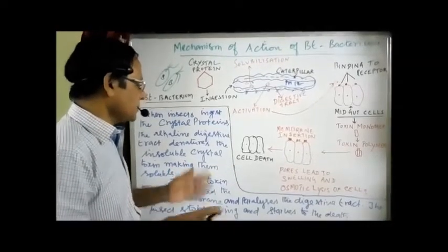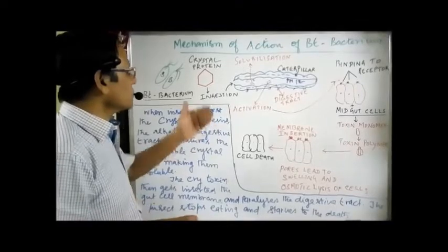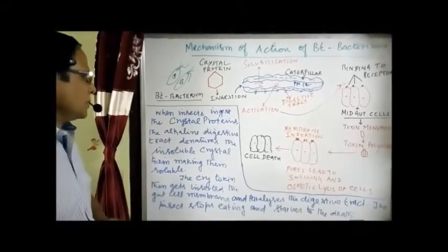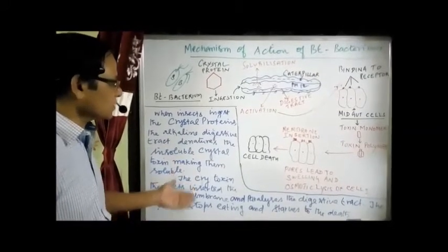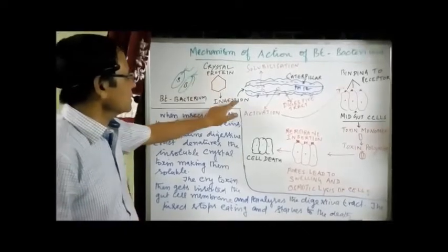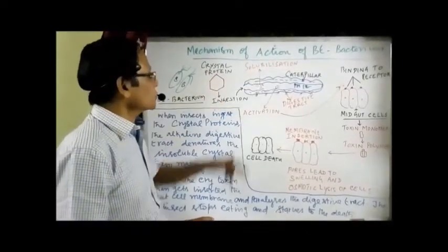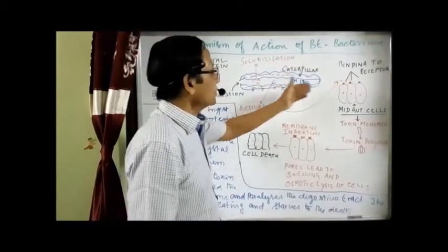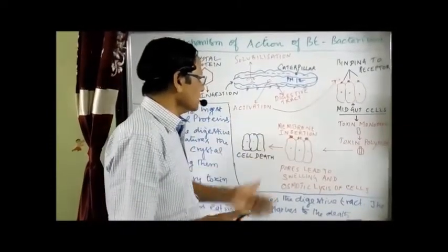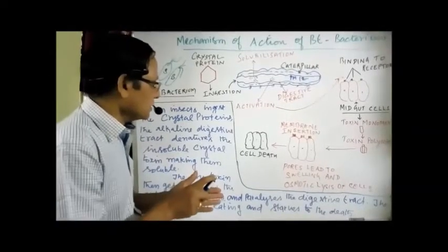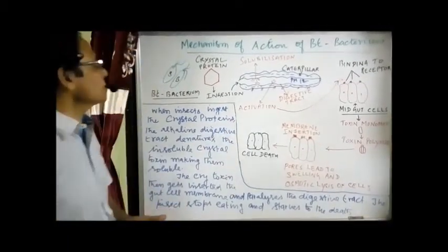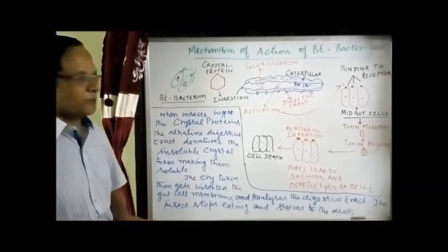The midgut becomes paralyzed, so the animal is unable to eat — it stops eating and dies as a result. The midgut is paralyzed, causing starvation, and the larva dies. In summary: the Bt bacterium produces a crystal protein (delta endotoxin), which is ingested, made soluble, activated by binding to a receptor, converted into toxin polymer, inserted into the membrane creating pores, water enters causing swelling and bursting of cells, leading to cell death. This is the mechanism of Bt toxin.